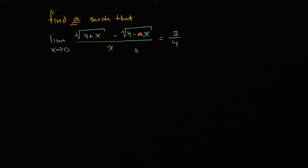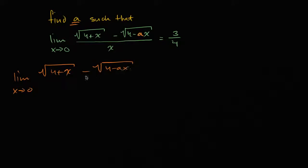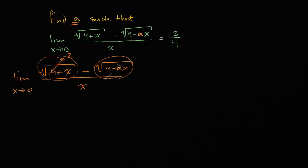Assuming you've had your go, let's do this together. When you try to superficially evaluate this limit, if you just substitute x equals zero, you get: the square root of four plus zero is the principal root of four, which is two. And no matter what a is, a times zero is zero, so the square root of four minus zero is also two. So the numerator becomes two minus two, which is zero, and the denominator is zero.